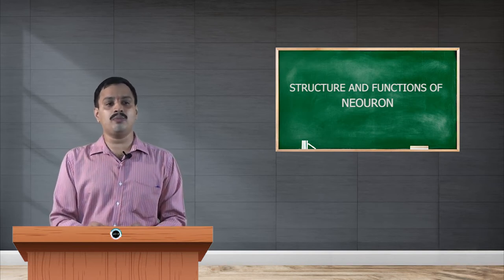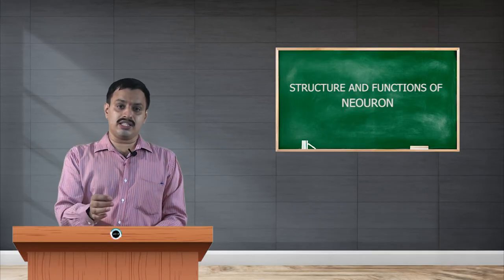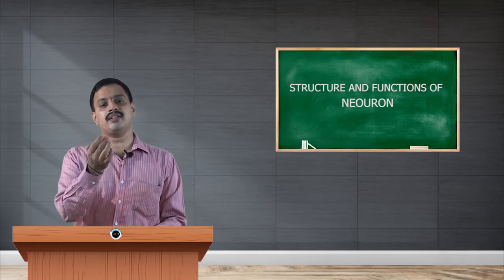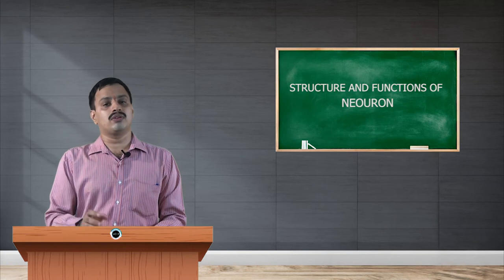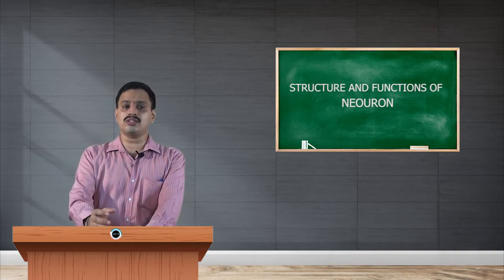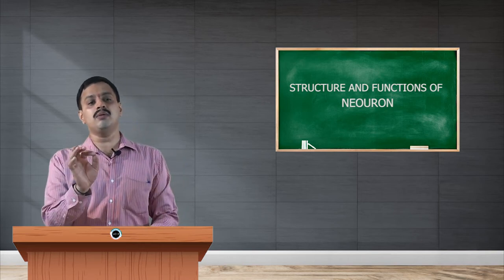The next part is the cell body. The cell body is a permeable membrane which contains fluids in it, and there will be a cell nucleus in it. The cell nucleus is at the center of the cell body, and the cell nucleus contains DNA and RNA. The genes are located in chromosomes, and these chromosomes are located at the center of the cell nucleus. The nucleus controls the entire neuron — the entire functioning of the neuron is controlled by the cell body or the cell nucleus.